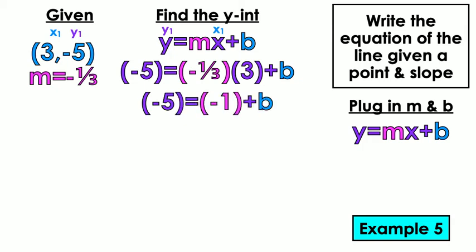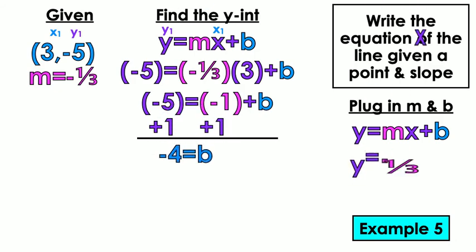Negative 1. Stop making the fraction complicated. What's a third of 3? A third of 3 is 1. And you multiply by a negative. So negative 1. Get rid of that negative 1. Negative 4 equals B. Plug them jokers in. Y equals negative 1 third X minus 4.